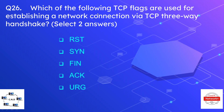Question number twenty-six is: which of the following TCP flags are used for establishing a network connection via TCP three-way handshake? We have to select two answers. Options are reset flag, sync flag, fin flag, ACK flag, and urgent flag. The correct options are the SYN (synchronization) flag and the acknowledgement flag — these are the two flags used during the three-way handshake.